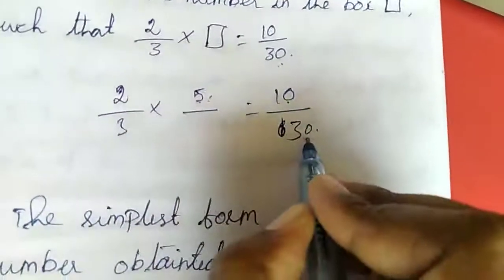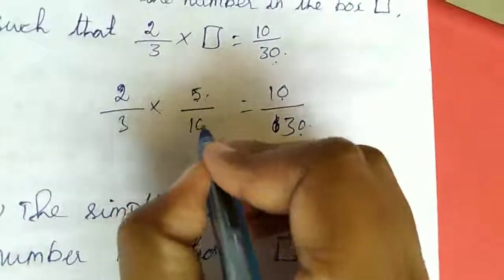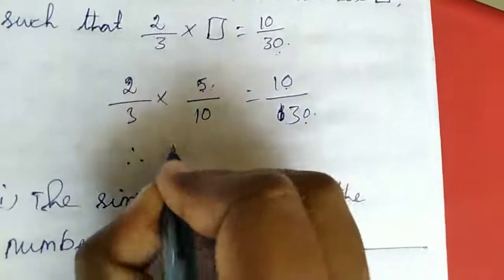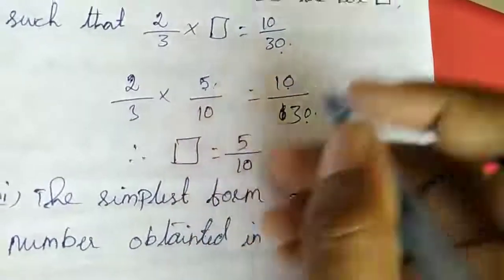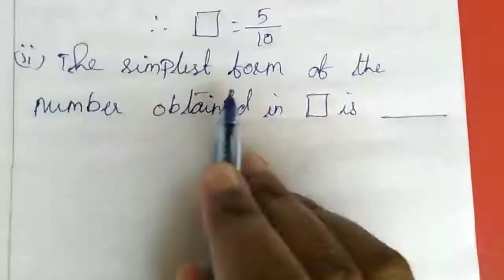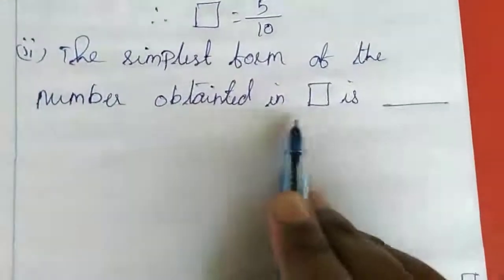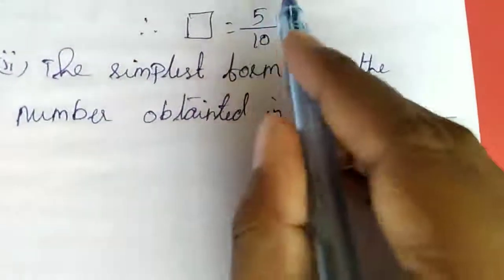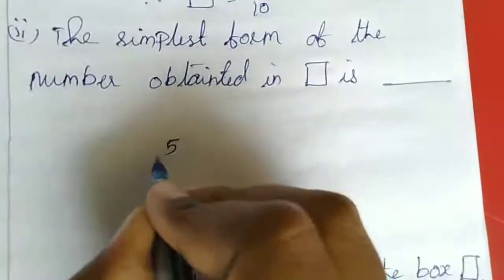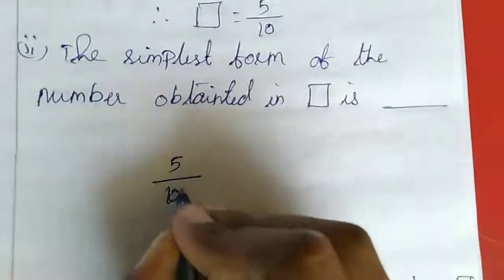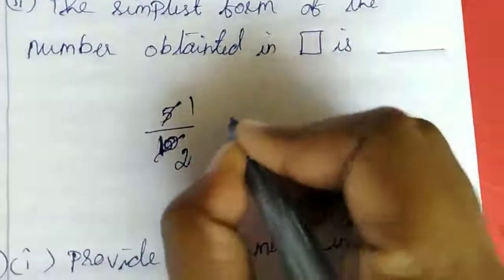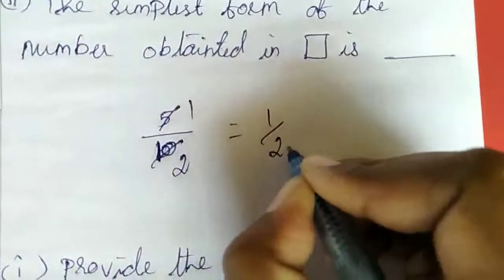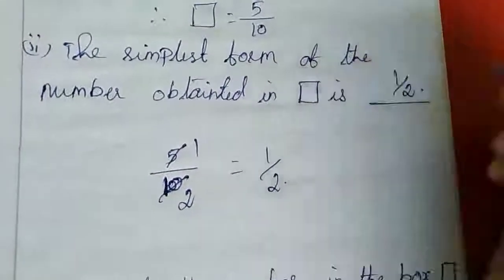So the fraction is, in the box what we want to write is 5 by 10. This is the answer. Next: the simplest form of the number obtained in the box. 5 by 10, this one in simplest form. 1 times 5 is 5, 2 fives are 10. So the simplest form is 1 by 2. Here it will come 1 by 2.